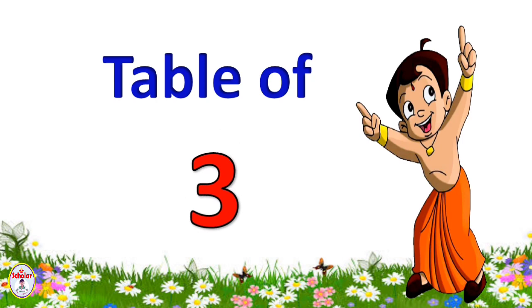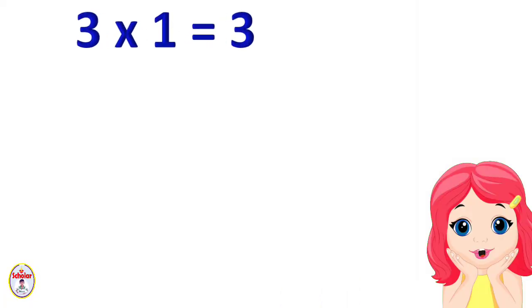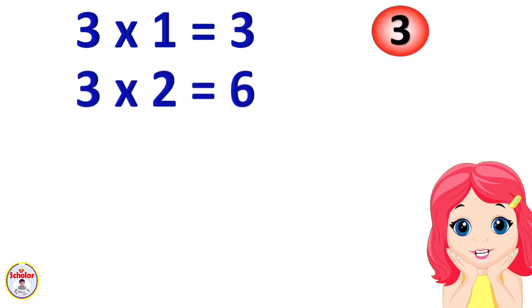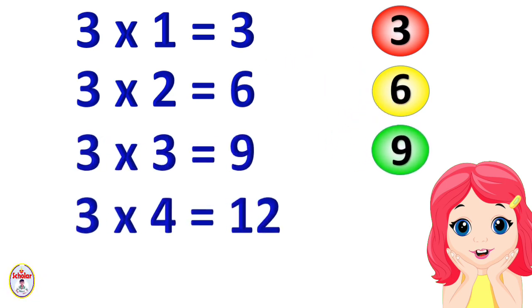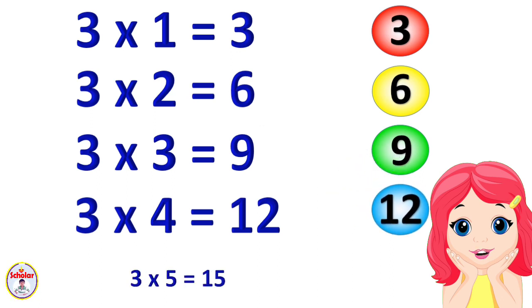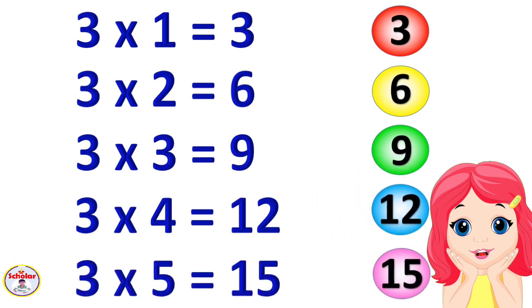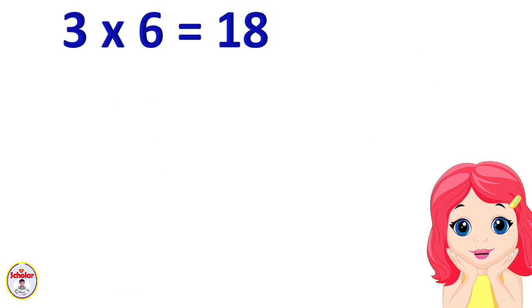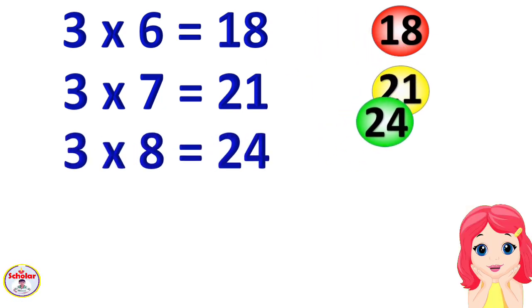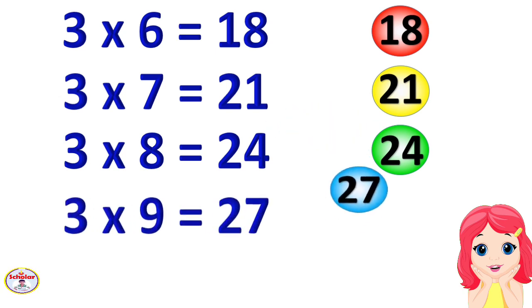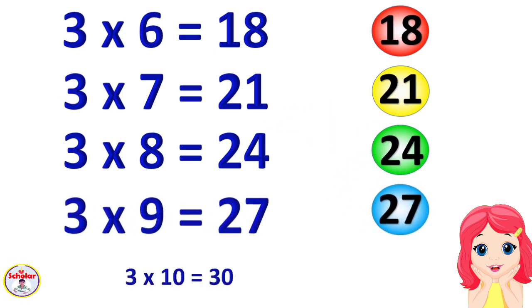Table of 3. 3×1=3, 3×2=6, 3×3=9, 3×4=12, 3×5=15, 3×6=18, 3×7=21, 3×8=24, 3×9=27, 3×10=30.